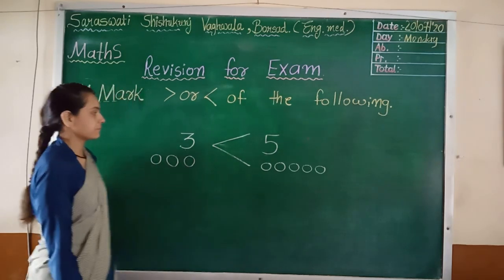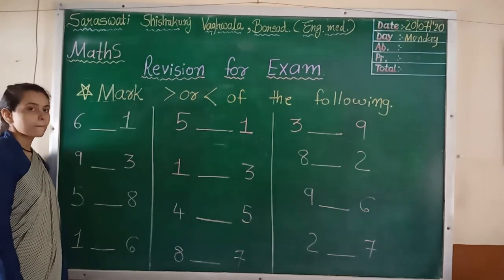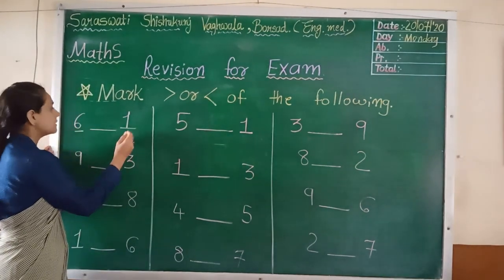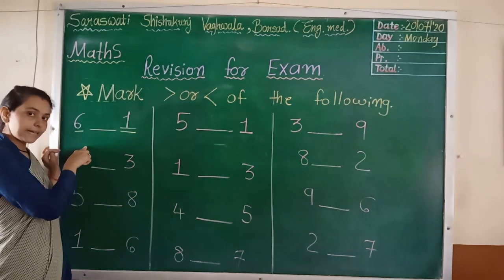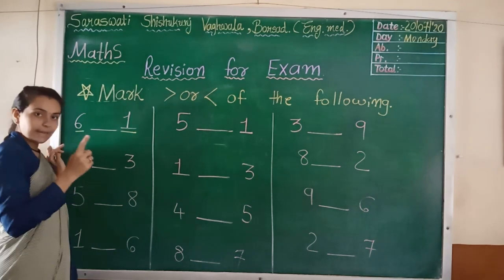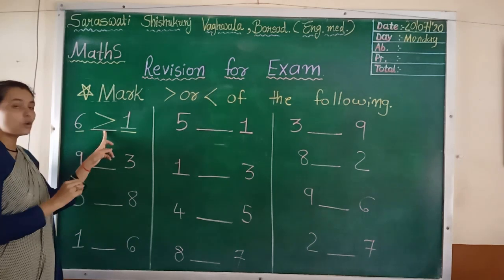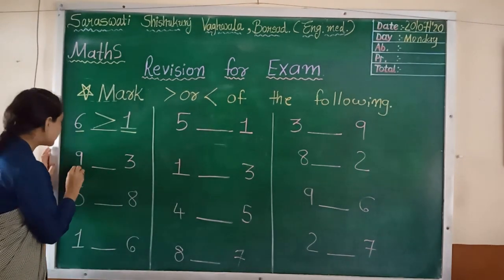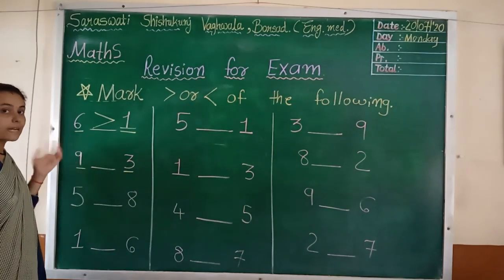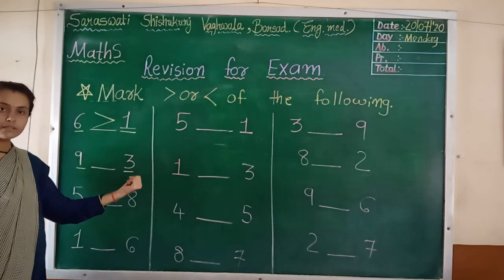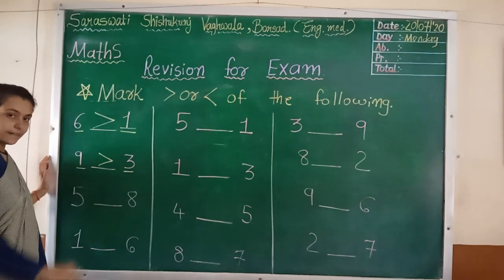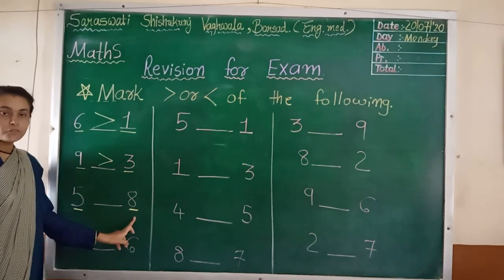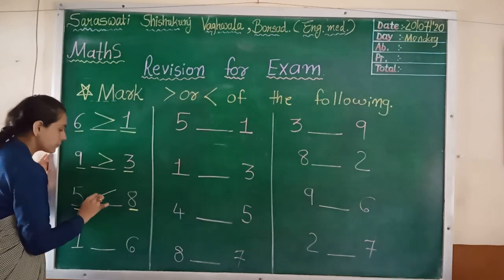Now we will take more examples. See here, first one we have to draw underline. Six and one. Now think, which is the big number? Six, right? So, what I told you: open mouth at bigger number. So, this way — this is called greater than. Next, nine and three. Which is the big number? Nine or three? Nine, right? So, greater than. Next, draw underline. Five and eight. Which is the bigger number? Eight, right? So, less than. One and six. Which is the bigger number? Six, right? So, less than.